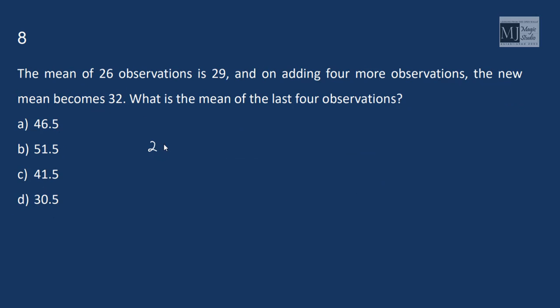The mean of 26 observations is 29, and on adding 4 more observations, the new mean becomes 32. What is the mean of the last 4 observations? Now 26 into 29 is 754 and 30 into 32 is 960. So the difference should be the total of these 4 new elements. So the mean of the last 4 observations is 206 by 4, that is 51.50.